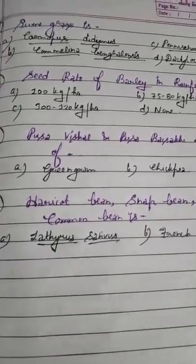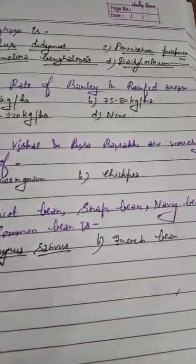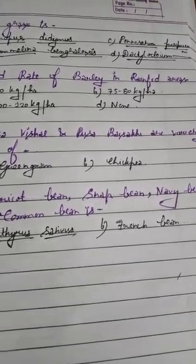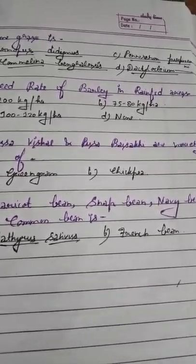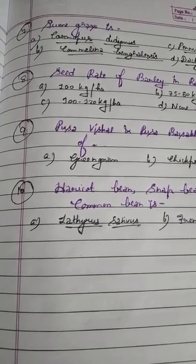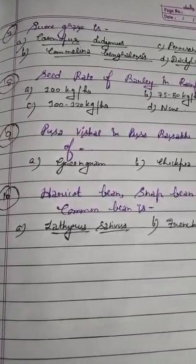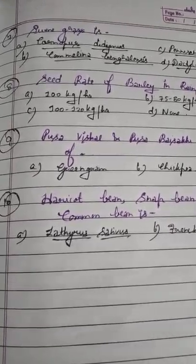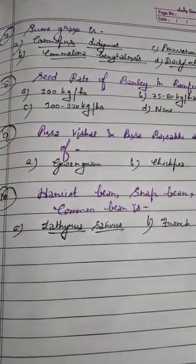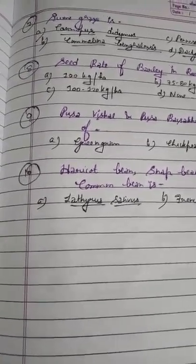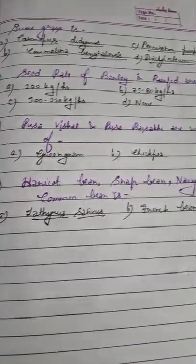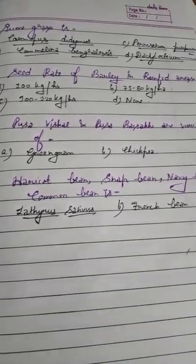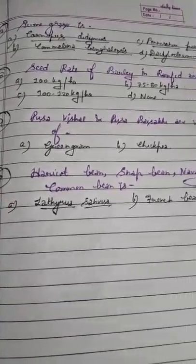Question 7: Swine grass is — Option A: Coronopus didimus, Option B: Pennisetum purpureum, Option C: Commelina benghalensis, Option D: Dactyloctenium. Dactyloctenium is called Makra in Hindi. Pennisetum purpureum is called elephant grass. Commelina benghalensis is tropical spiderwort. Swine grass is Coronopus didimus, also called Jungli tarataj or tarataj.